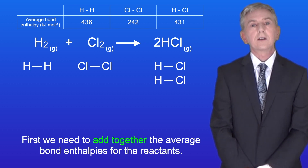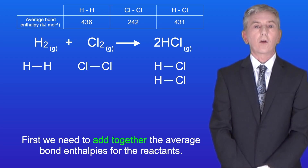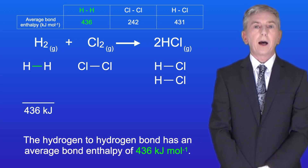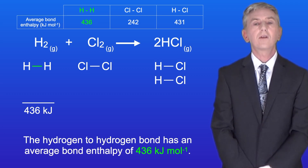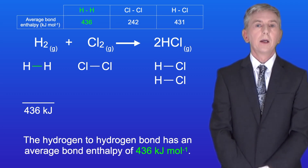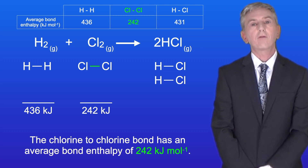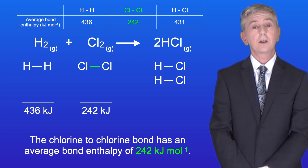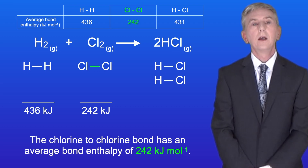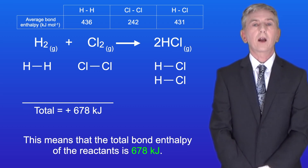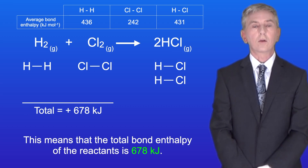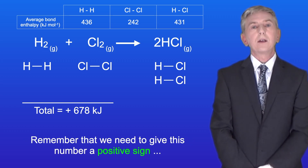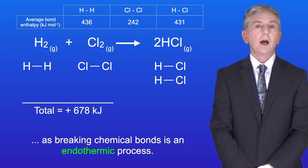Okay, first we need to add together the average bond enthalpies for the reactants. The hydrogen to hydrogen bond has an average bond enthalpy of 436 kilojoules per mole, and the chlorine to chlorine bond has an average bond enthalpy of 242 kilojoules per mole. This means that the total bond enthalpy of the reactants is 678 kilojoules, and remember that we need to give this number a positive sign, as breaking chemical bonds is an endothermic process.